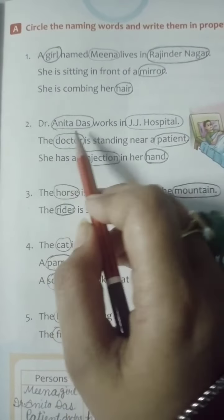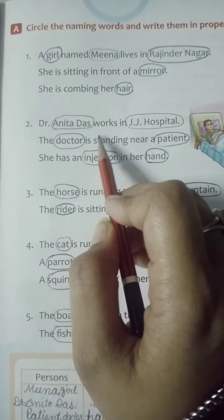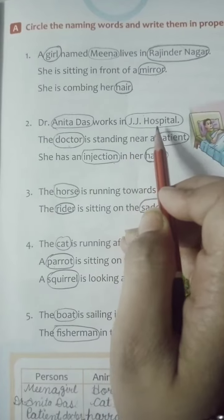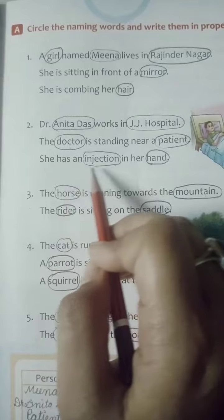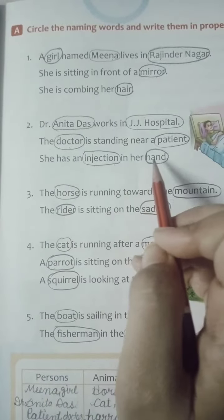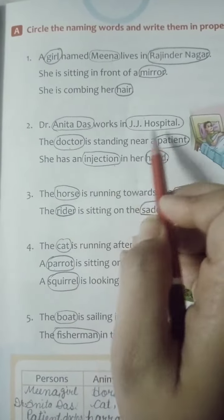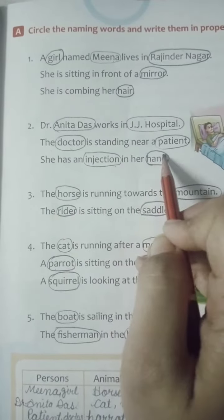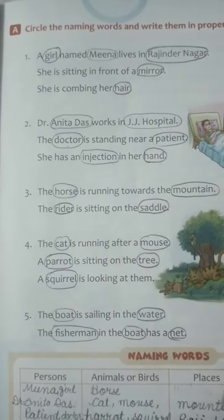In the second sentence: Dr. Anita Das works in JJ Hospital. The doctor is standing near a patient. She has an injection in her hand. We will circle the naming words in these sentences.